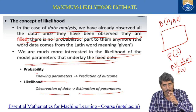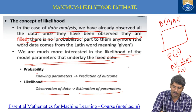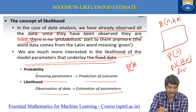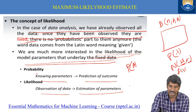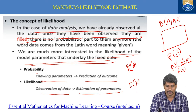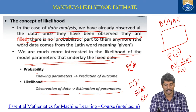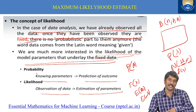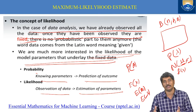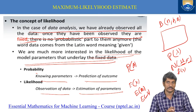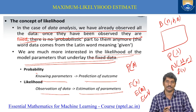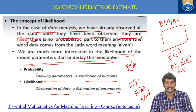Probability always concerns the happening of an outcome or event. Likelihood, on the other hand, concerns the estimation of parameters — estimating the population mean, estimating the population variance, estimating the population median. That is the clear difference between probability and likelihood.